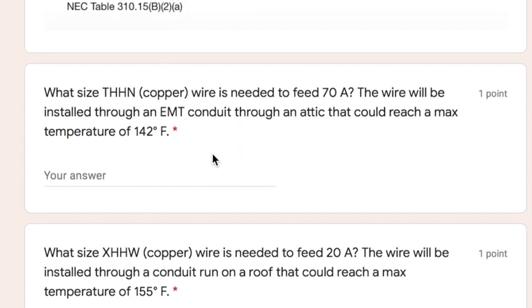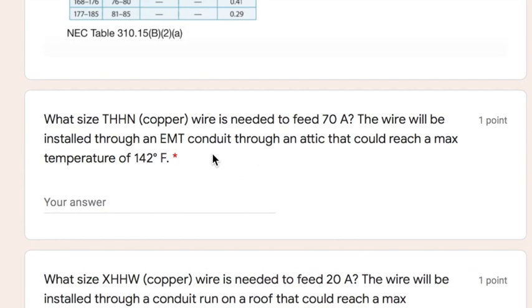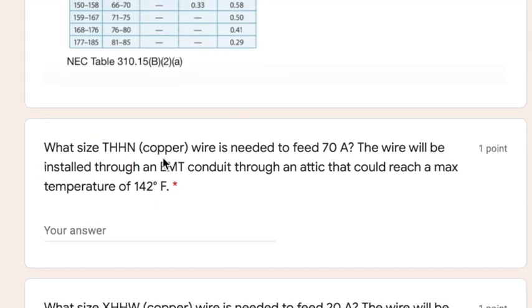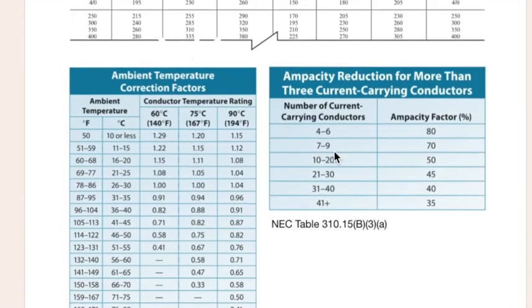First one, what size THHN copper wire is needed to feed 70 amps? The wire will be installed through an EMT conduit through an attic that could reach a max temperature of 142. So there's no adjustment factor with this because I didn't say anything about number of conductors, but I am telling you that we have to worry about the temperature. Well, it's going to be essentially the same thing we did with adjustment factor.